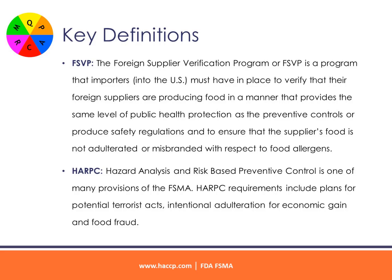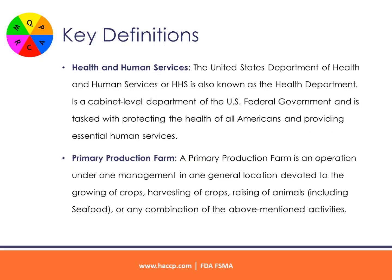HARPSI — Hazard Analysis and Risk-Based Preventive Control is one of many provisions of the FSMA. HARPSI requirements include plans for potential terrorist acts, intentional adulteration for economic gain, and food fraud. Health and Human Services — the United States Department of Health and Human Services, or HHS, also known as the health department, is a cabinet-level department of the US federal government.